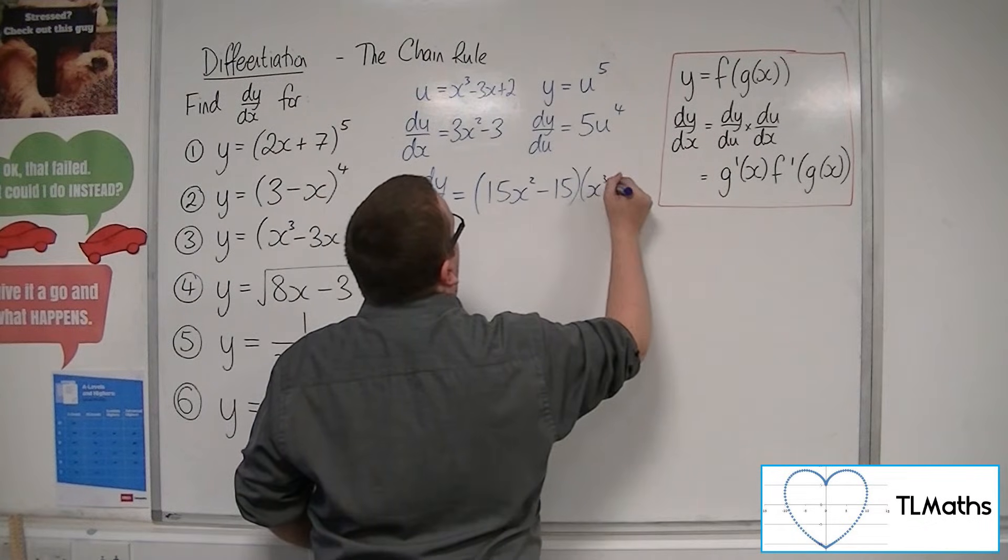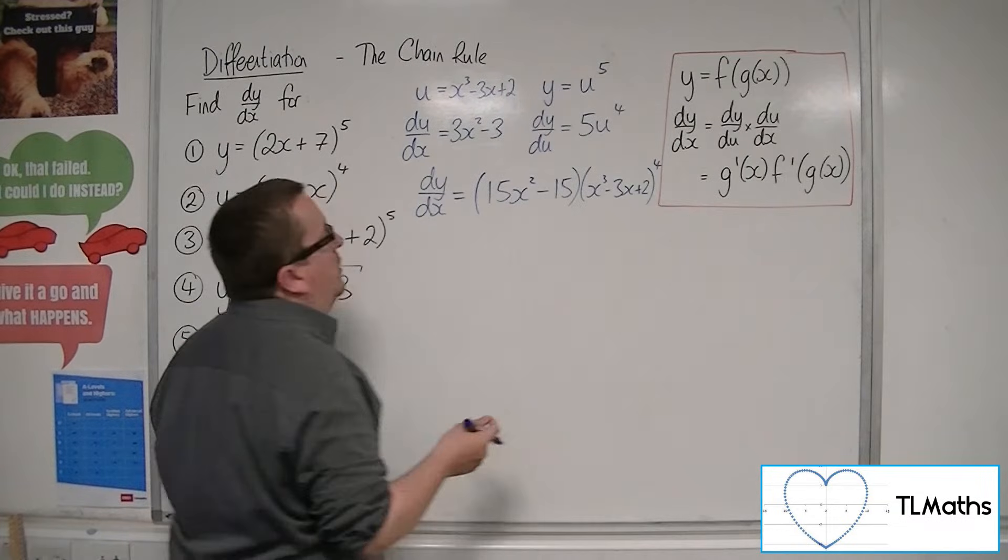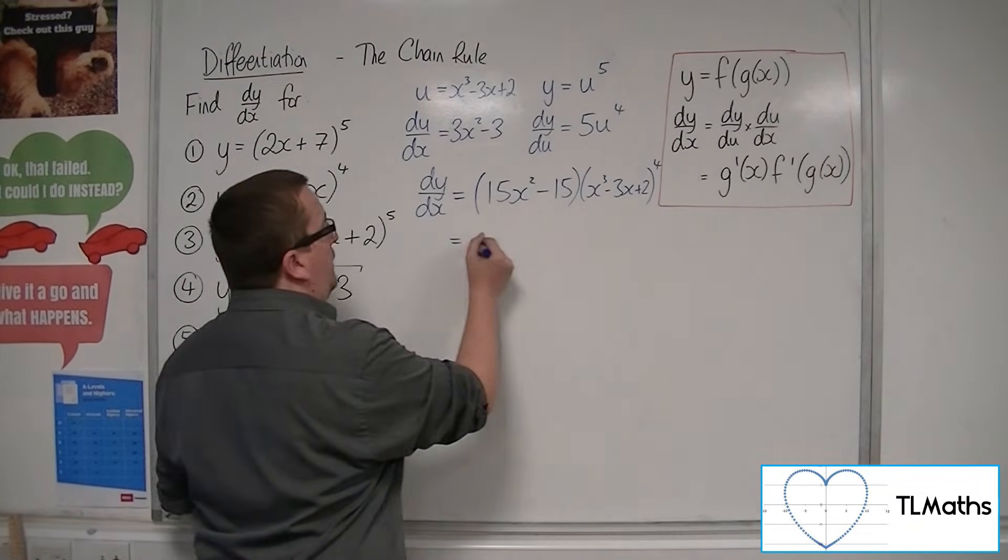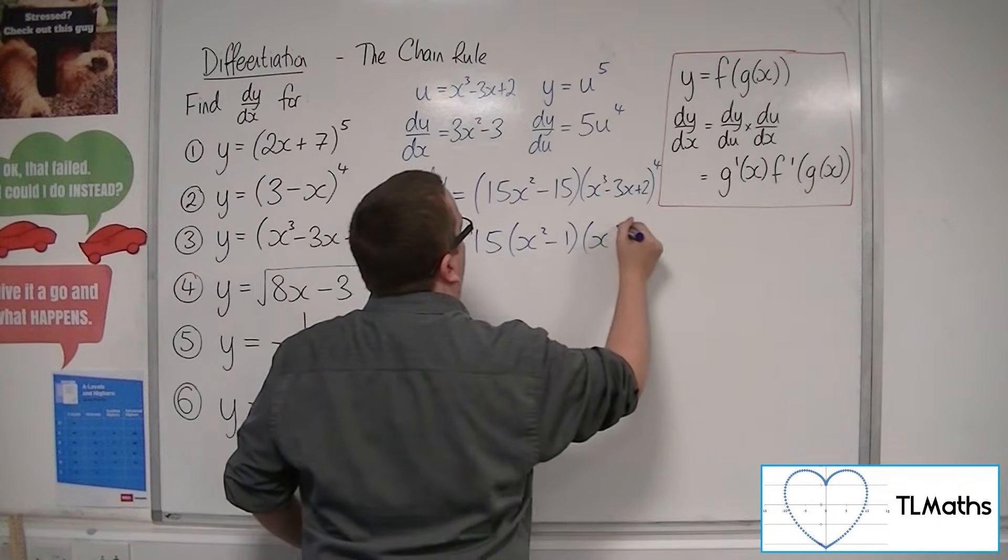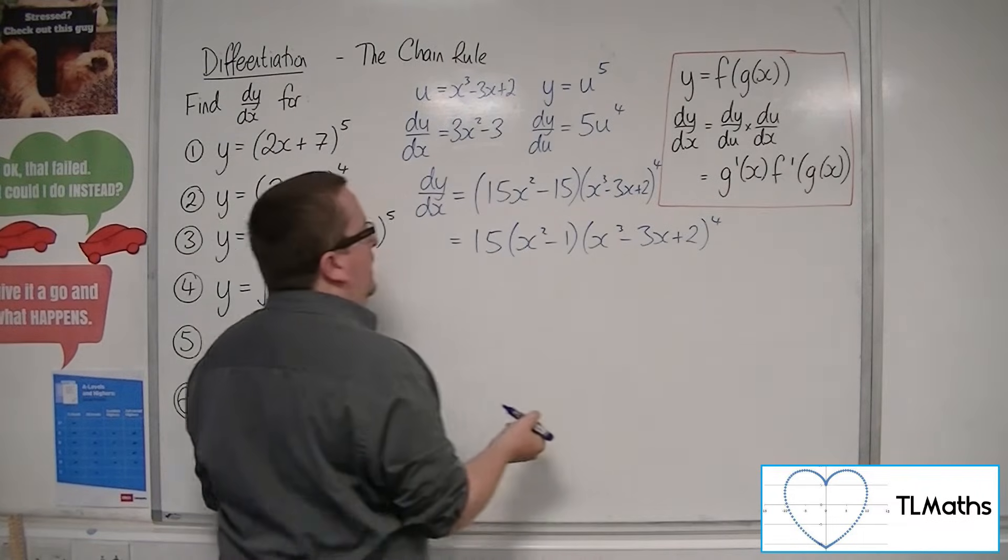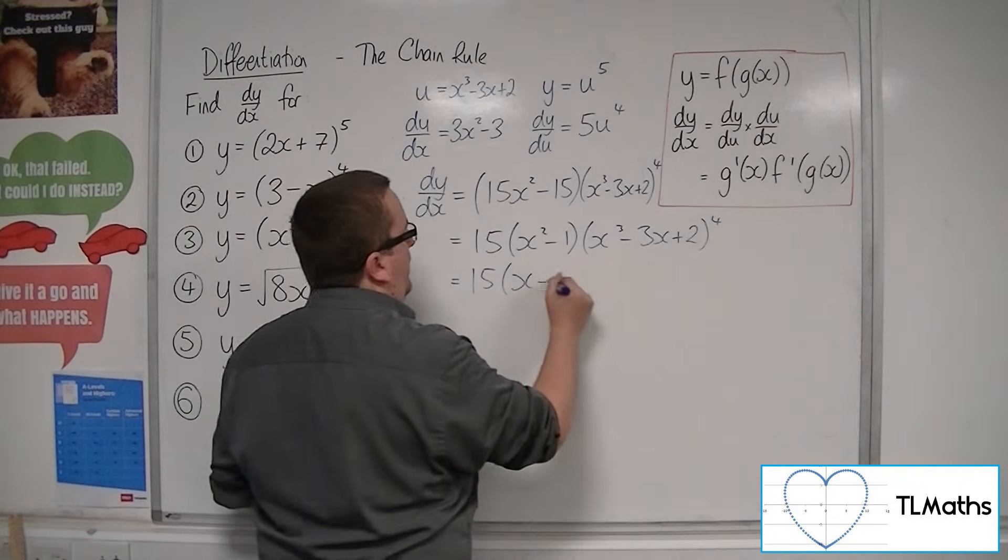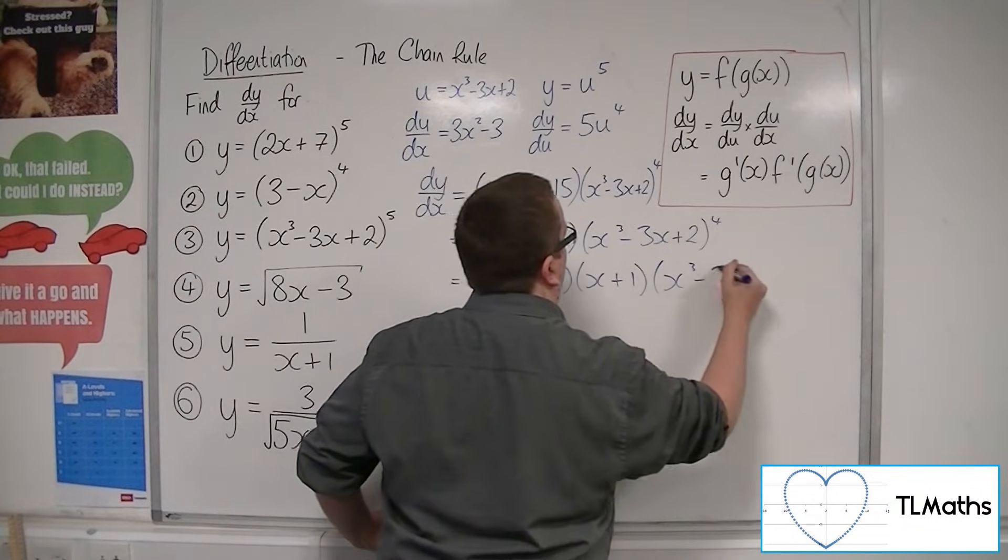So x cubed minus 3x plus 2 to the power of 4. Now, of course, you could factor the 15 out here if you wanted to. So 15 lots of x squared minus 1, x cubed minus 3x plus 2 to the power of 4. And, of course, that's difference of two squares. So if you wanted to factorise that as well, you could.